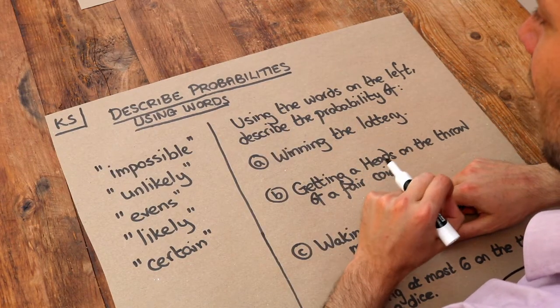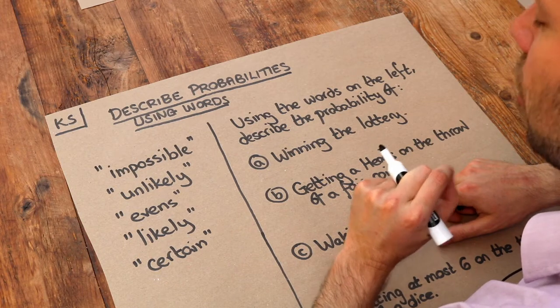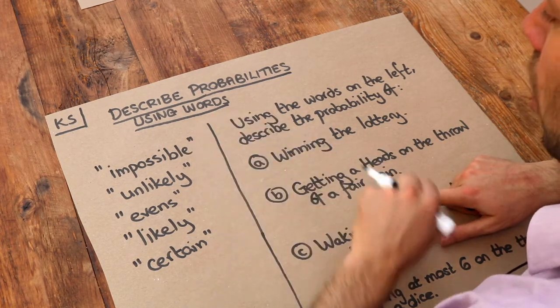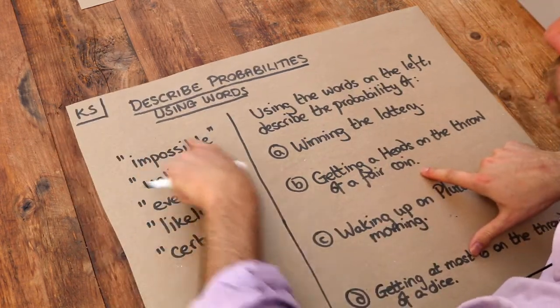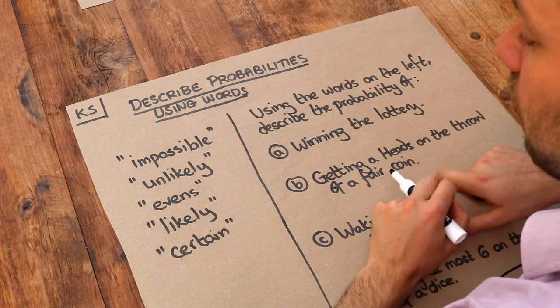Now we'll get on to how we can represent probability using numbers, but initially we're going to use words to describe how likely something is, and these are the words that you should be familiar with by the end of this video.